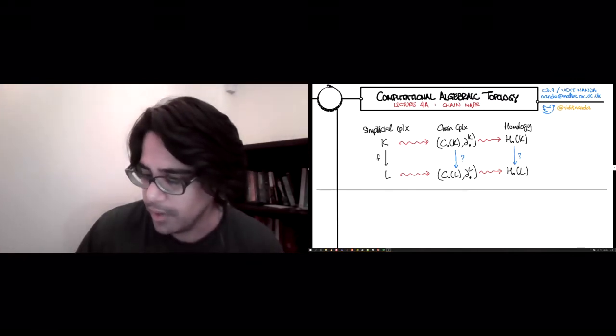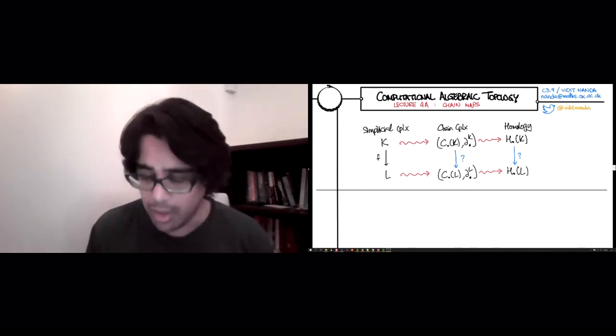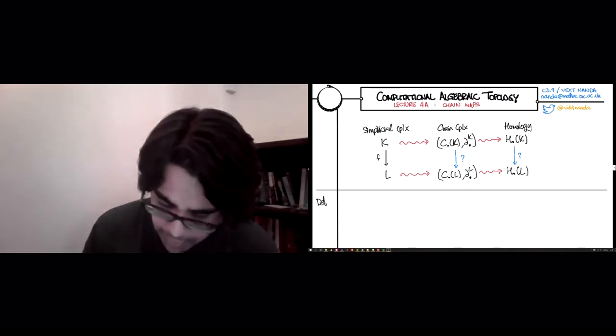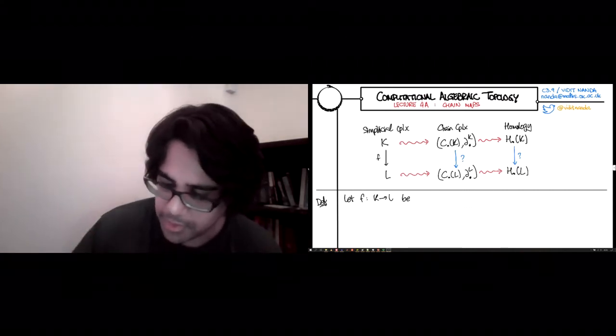So here is the answer to the first blue arrow, the chain complex stuff. Here's the definition. If you let f from K to L be a simplicial map,